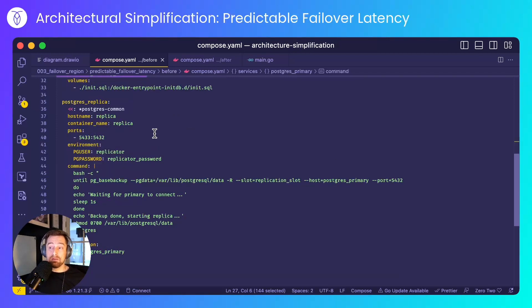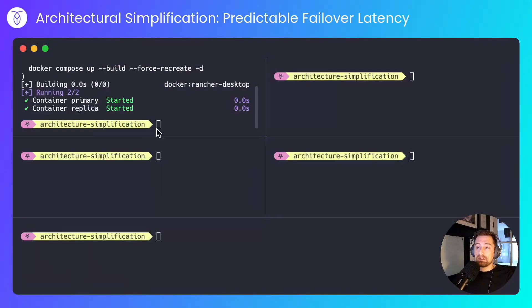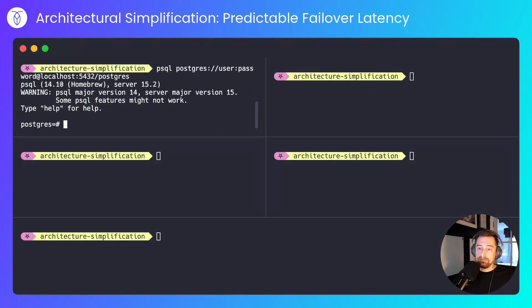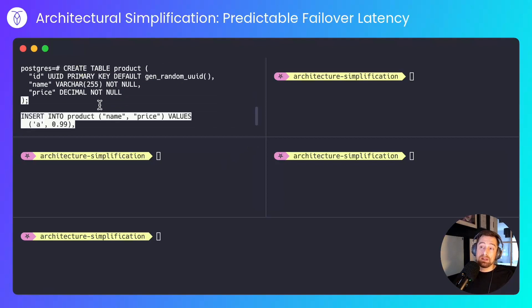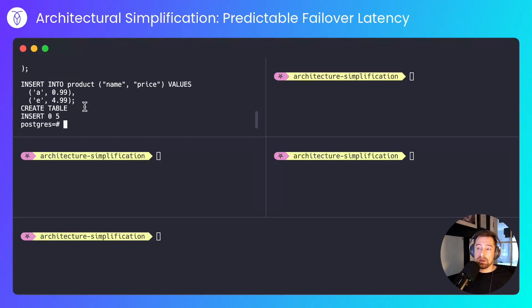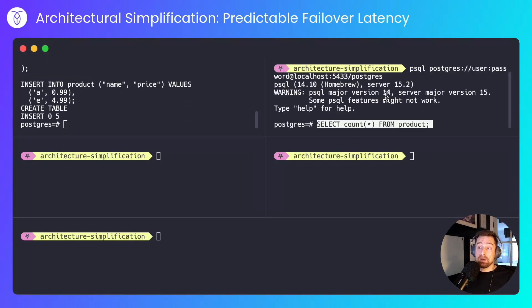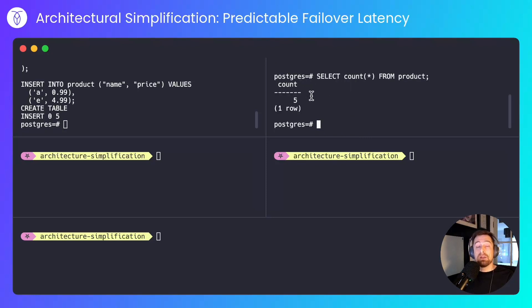I'll set up the replica node, which will be running pg_basebackup to replicate from the replication slot created on the primary. I'll connect to the primary node now and create a table into which I'll insert some data — a simple product table with a name and a price, inserting five values. Then I'll connect to the secondary node and select the count from the product table, and we'll see that replication has already happened, as initialization scripts ran when I created the compose infrastructure.